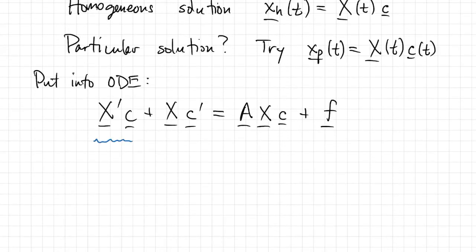But X is a fundamental matrix, so X prime is just equal to A times X. And that means the first term on the left must cancel out the first term on the right.